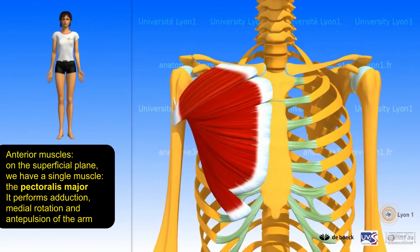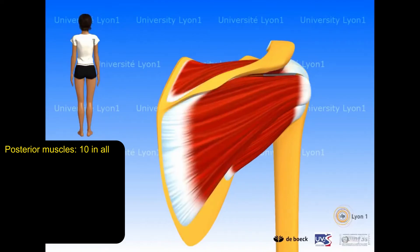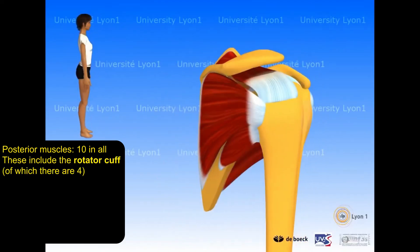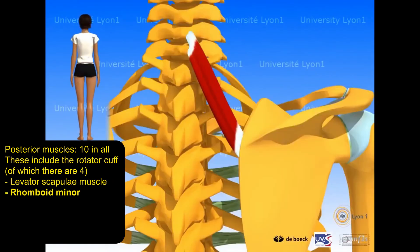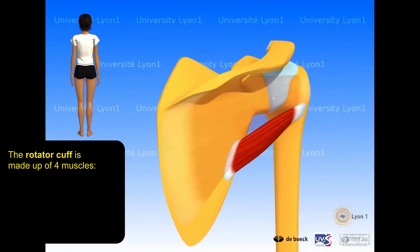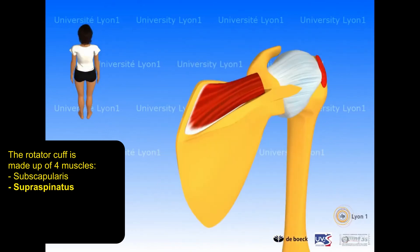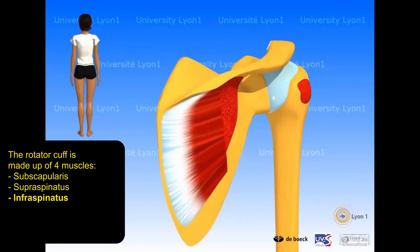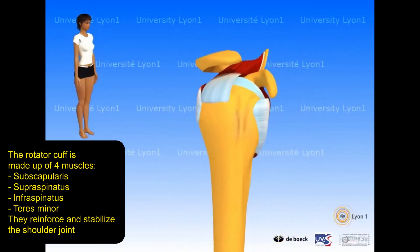On the superficial anterior plane, there is a single muscle — the pectoralis major — which performs adduction, medial rotation, and antipulsion of the arm. Posterior muscles, ten in all, include the rotator cuff, the levator scapulae, the rhomboid minor, the rhomboid major, the trapezius, the teres major, and the latissimus dorsi. The rotator cuff is made up of four muscles: subscapularis, supraspinatus, infraspinatus, and teres minor — they reinforce and stabilize the shoulder joint.